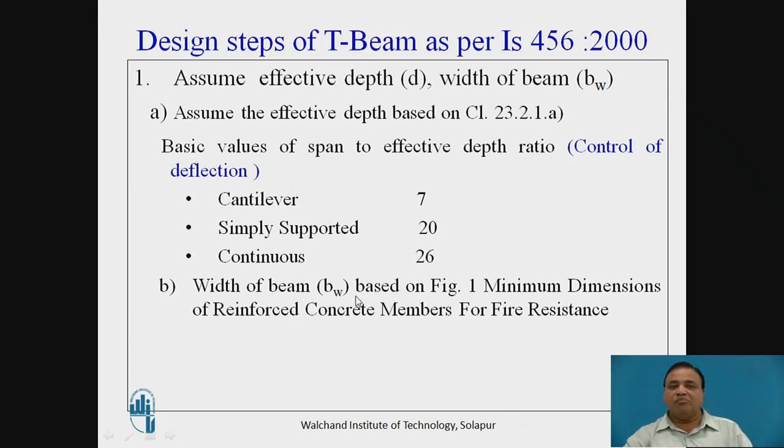The width of beam BW shall be based on figure number 1 that is minimum dimensions of reinforced concrete members for fire resistance. So minimum is usually 200 and it should be more than 200, it may be 230, it may be 250, 300 so on and so forth.